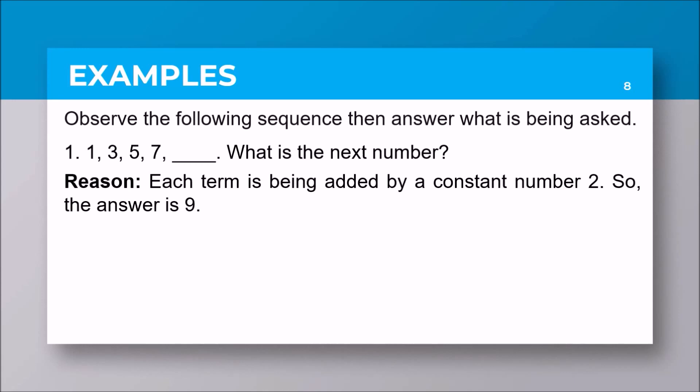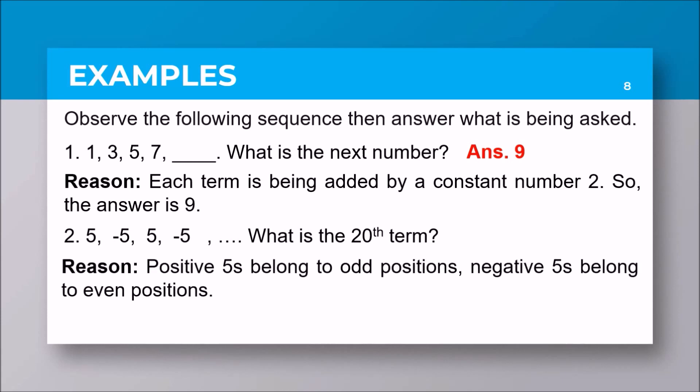Second problem: 5, negative 5, 5, negative 5. What is the 20th term? Again, observe the process. Those positive fives belong to odd positions of the sequence, while the even positions belong to the negative five. Since 20 is an even position, the 20th term of this sequence is negative 5.